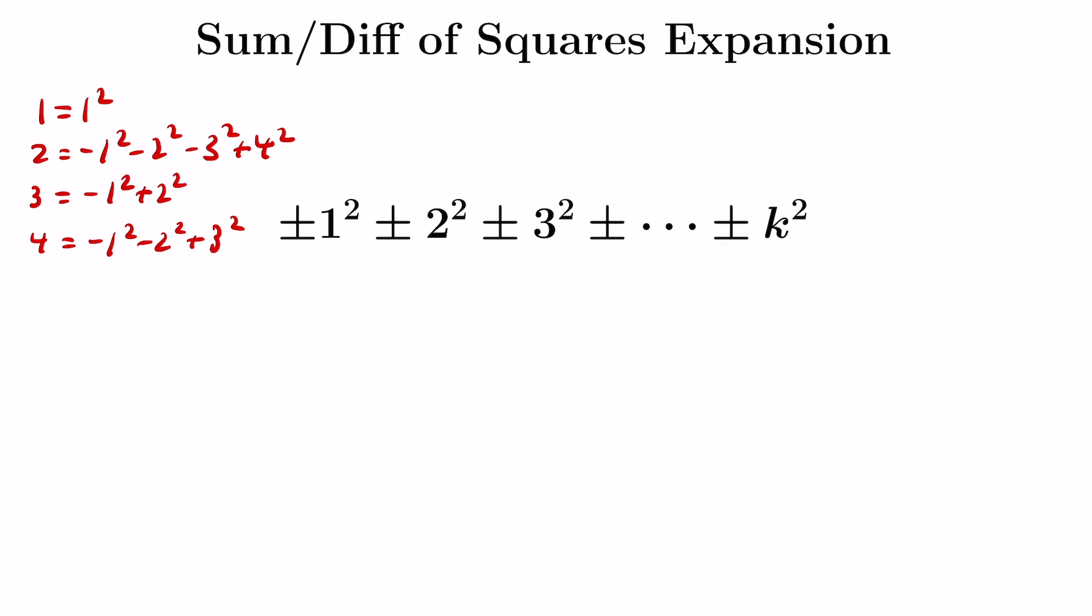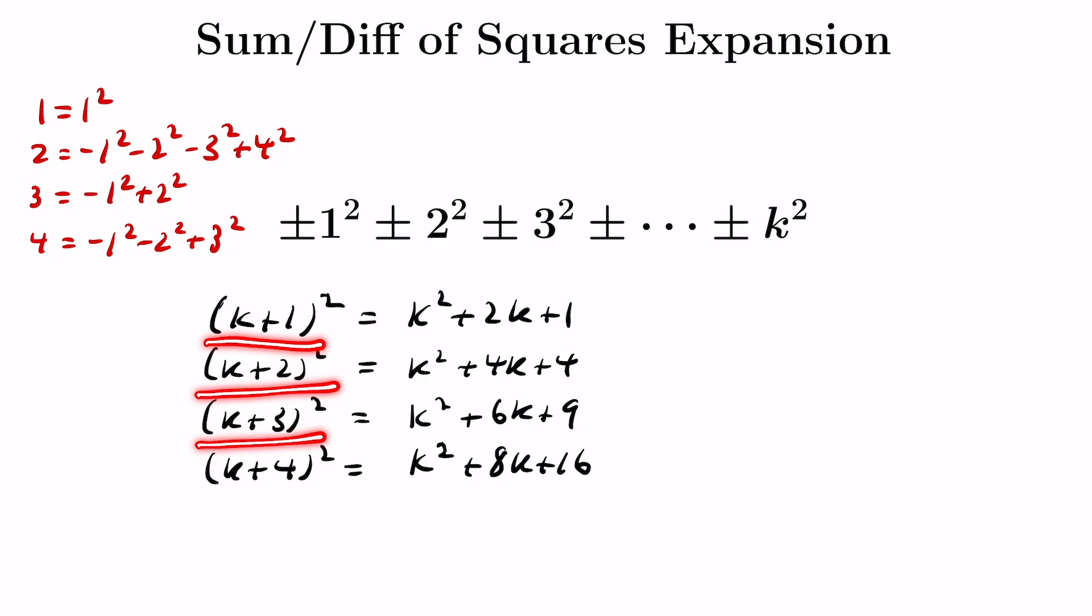Let's look at the squares of some numbers just larger than an arbitrary number k. So here are the squares of the next four numbers after k, and we notice something interesting about them. If we take a look at these intermediate coefficients, the coefficient of k in the expansion, they follow a pattern: they go 2, 4, 6, 8. So we can balance these out.